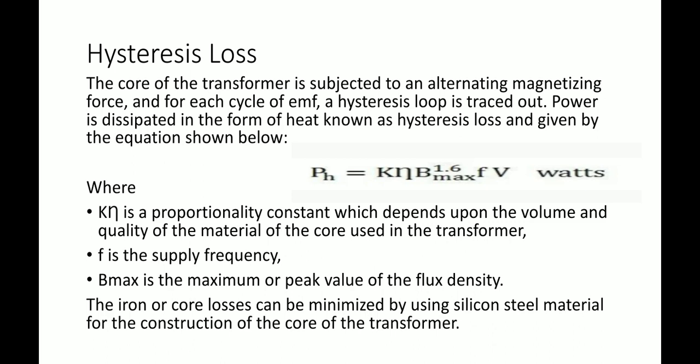Iron or core losses can be minimized by using silicon steel material for construction of the core of the transformer. To reduce the hysteresis loss, the Kn value is reduced by selecting better core material, which will cut our losses.